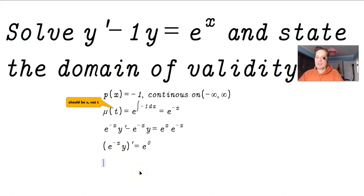On the right side, you have e^0, essentially. So then you have (e^(-x) · y)' equals 1, because e^0 is 1.